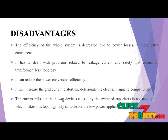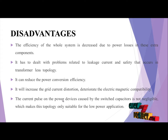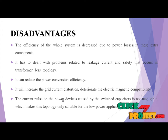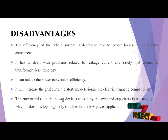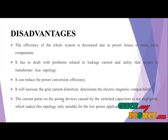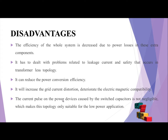Disadvantages of the existing system: The efficiency of the whole system is decreased due to power loss in extra components. It has to deal with problems related to leakage current and safety that occur in a transformerless topology. It can reduce the power conversion efficiency and increase grid current distortion, degrading electromagnetic compatibility. The current pulse on the power device caused by switching capacitors is not negligible, which makes the topology only suitable for low-power applications.